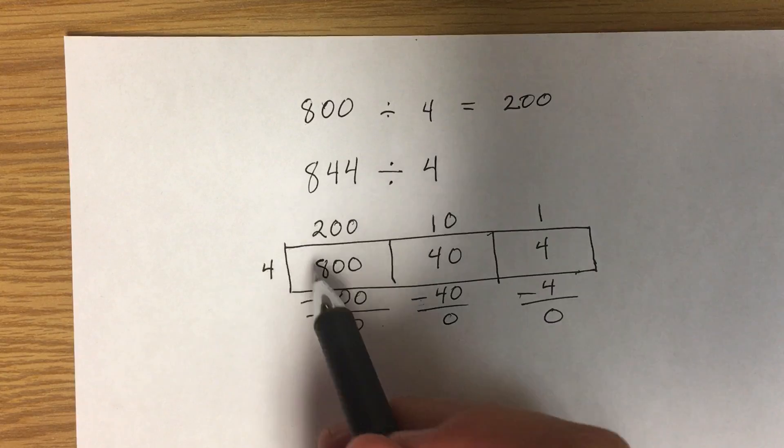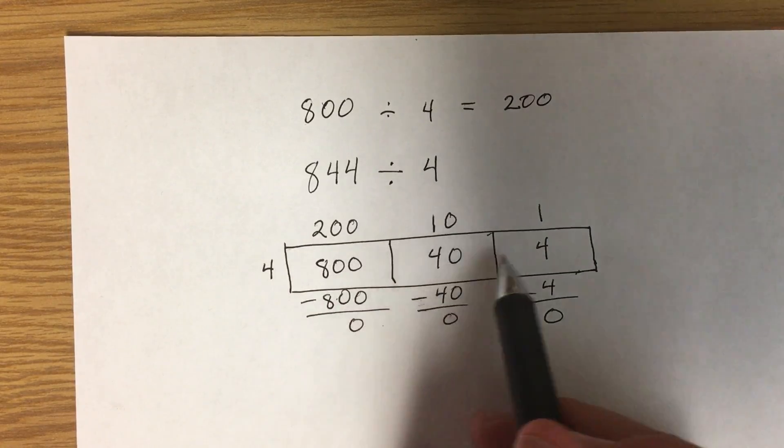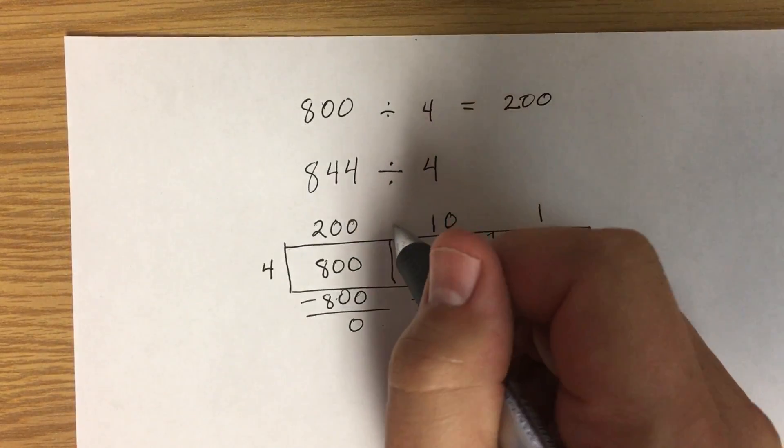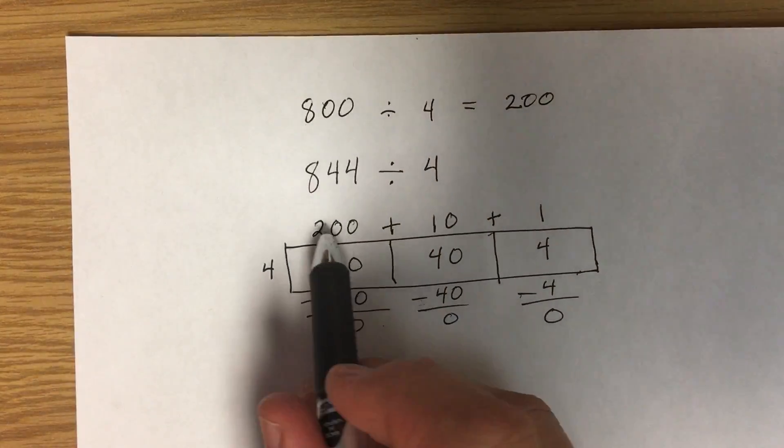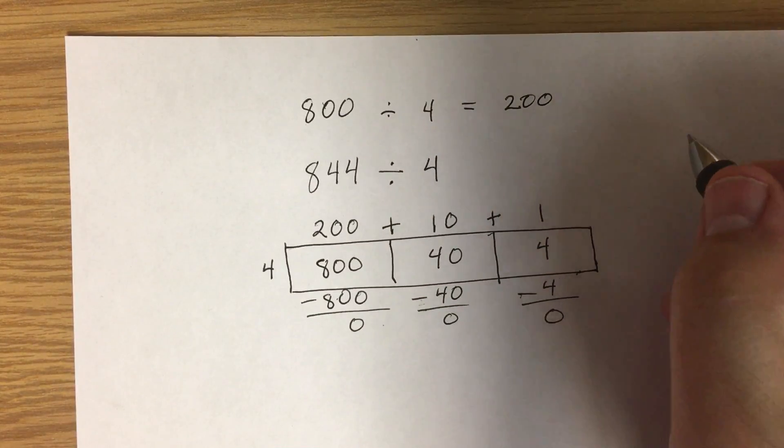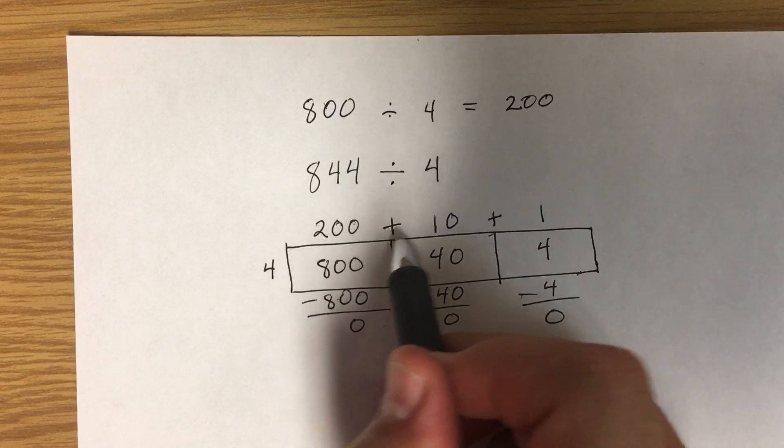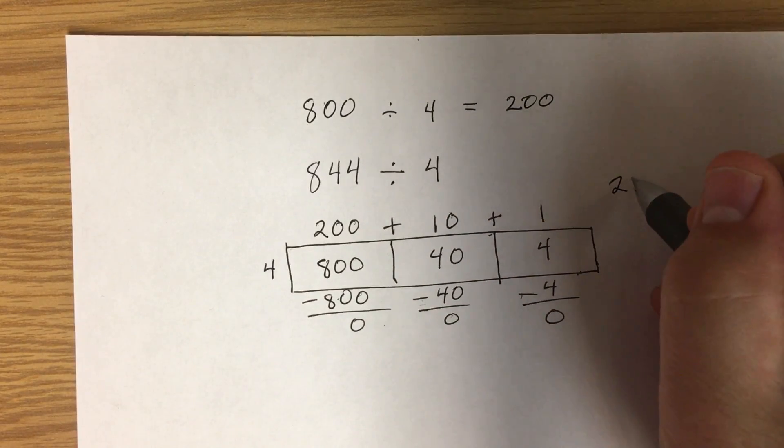So here we've basically divided each place value by the 4. And now our quotient is written in expanded form, and we're just going to add them together to find the answer. So the answer is 211.